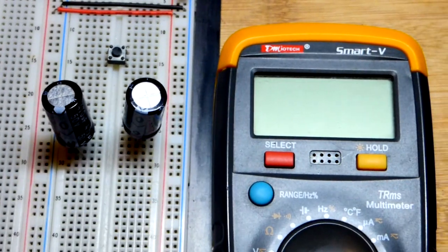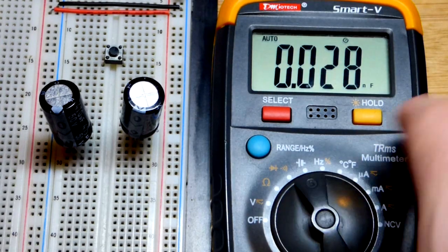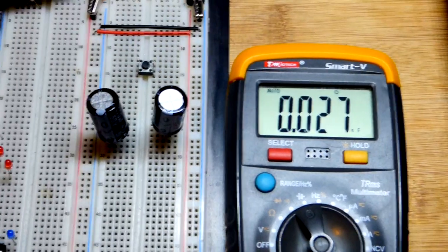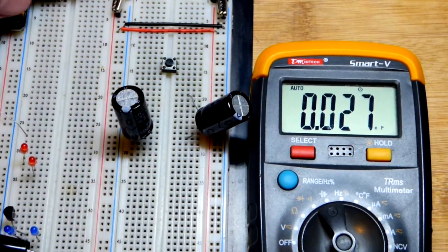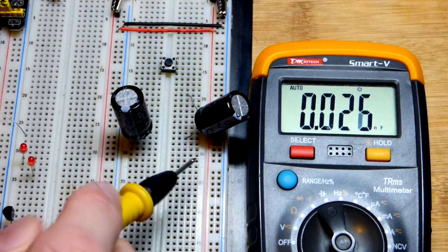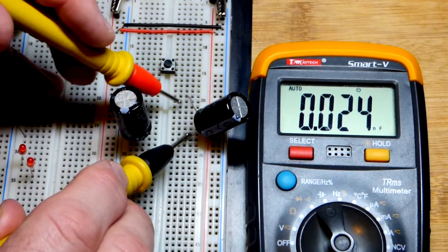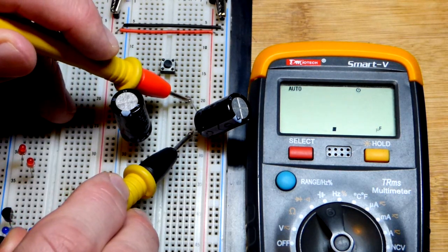Now, it's pretty simple. For this meter, set it to the capacitor setting. It's auto-ranging. Other ones, you've got to set a value that is higher than what you expect. These are 470 microfarad. I would set it to the setting higher than that, if it even had one higher than that.